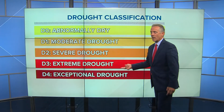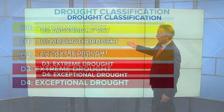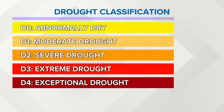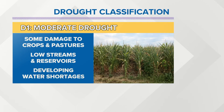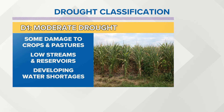Here are the five categories, starting with D0 to D4 — kind of like a tornado scale. Let's talk about abnormally dry first. That means short-term dryness. It's not usually a big problem; it might slow some of the plants down a little bit, the growth of the crops or the pastures. What's interesting is these drought classifications are really not directly tied to how much rainfall or lack of rainfall — that's only one of the criteria.